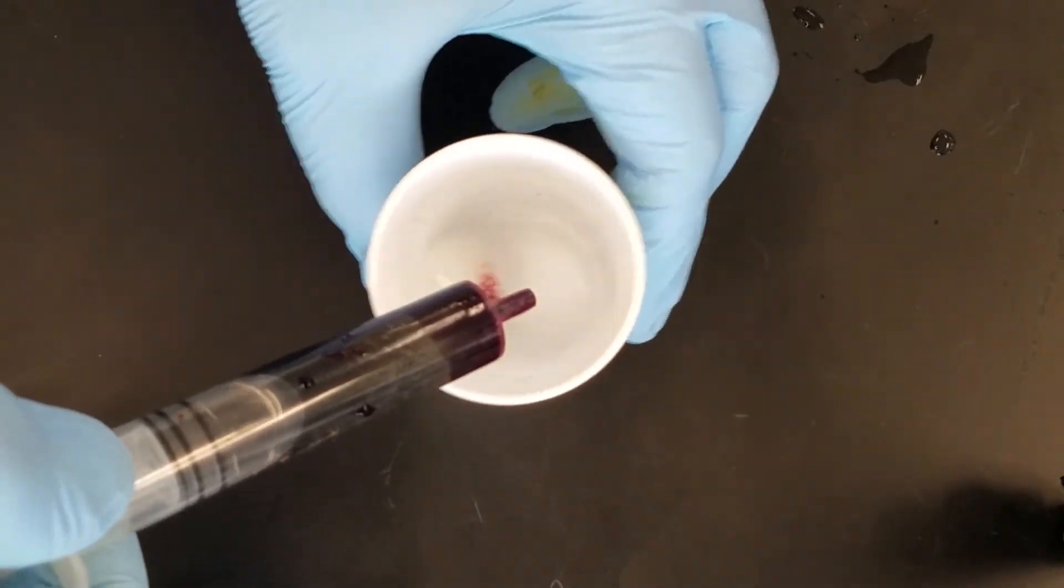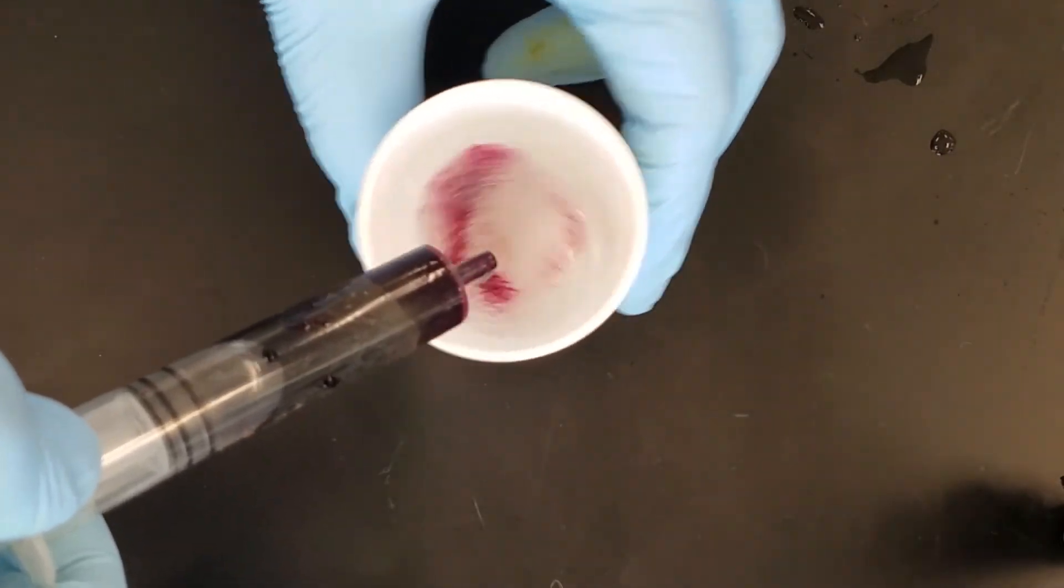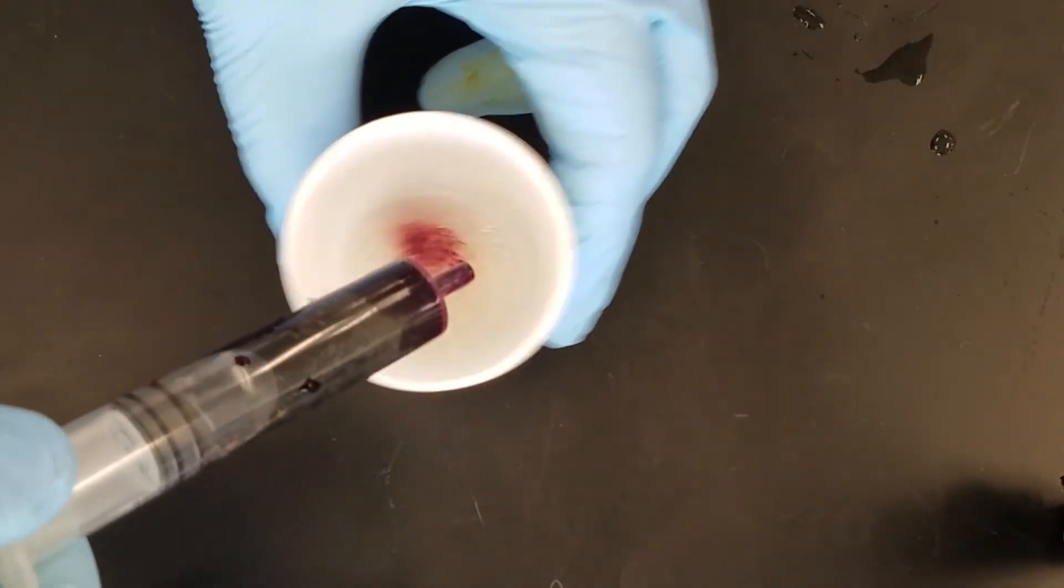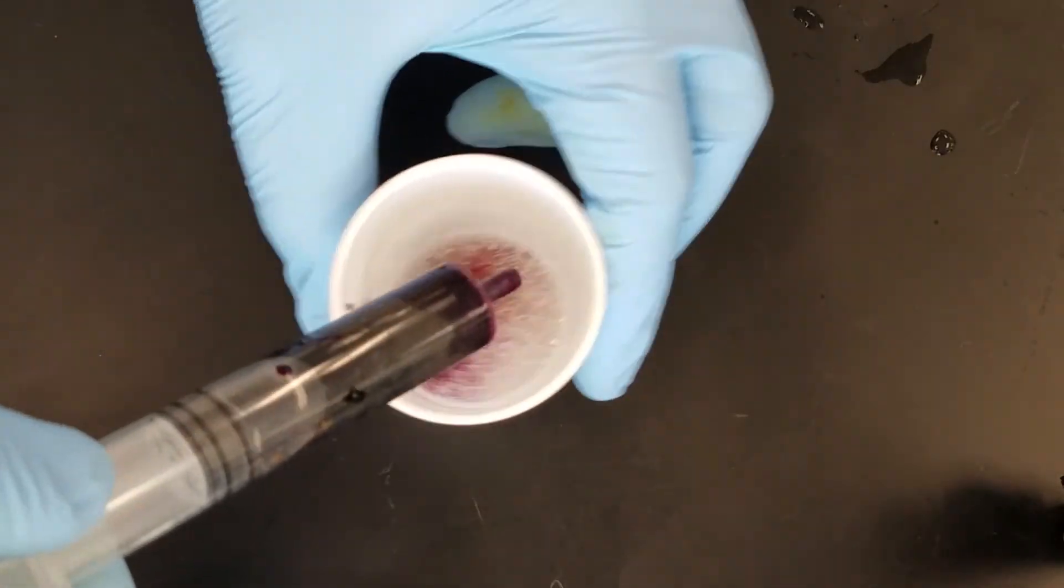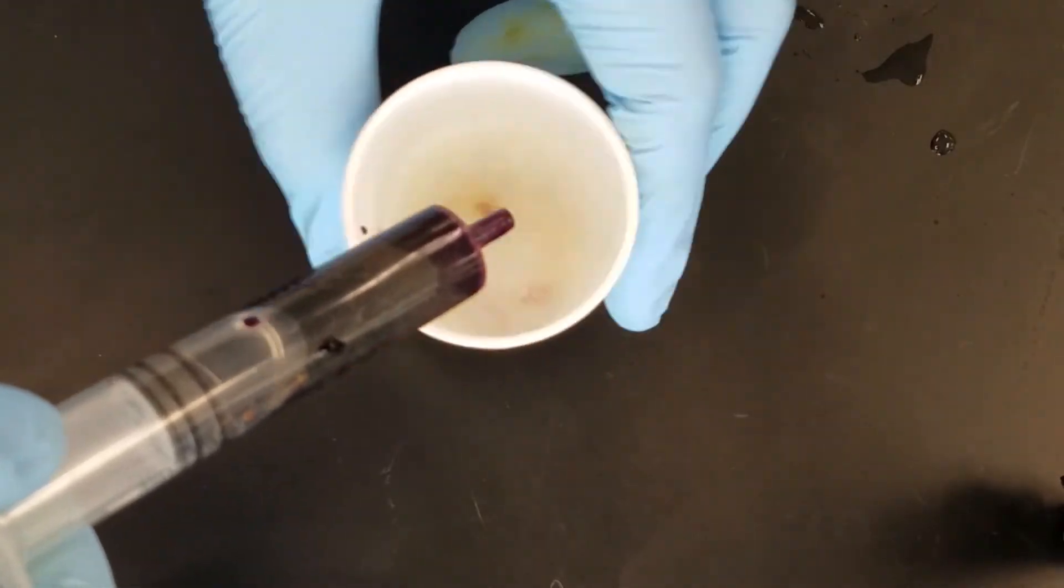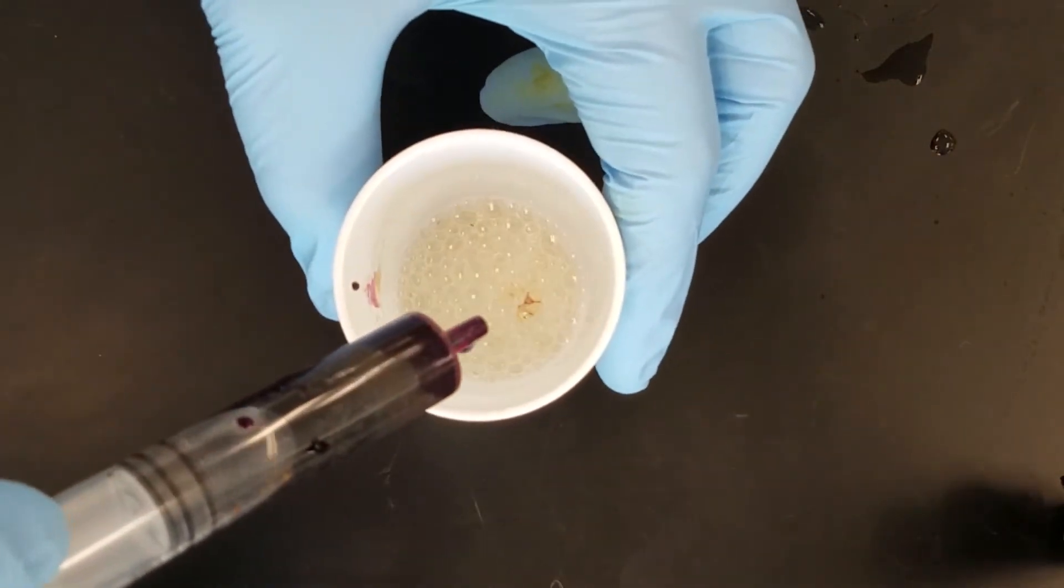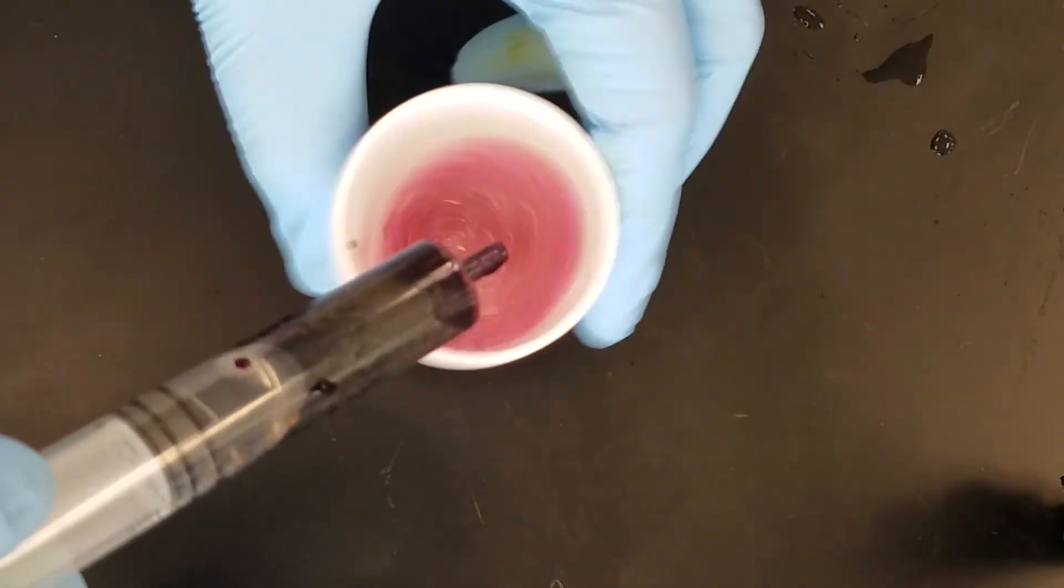The key is to keep it swishing around and you're going to notice it's going to change color a little bit. Keep swishing it around and it'll turn a little brown, but keep swishing it. Eventually it'll clear up.